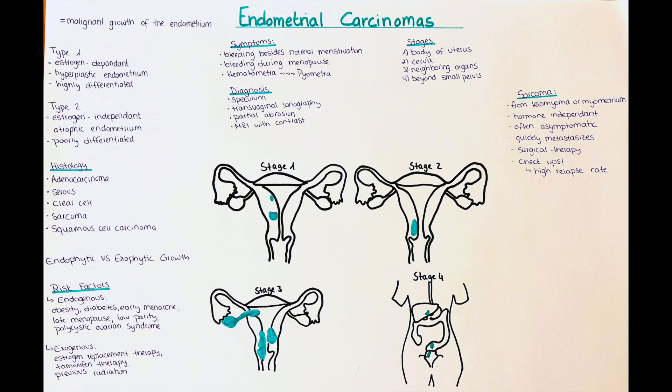There are several different types of endometrial cancer, which can be divided into two major groups. The first group is the estrogen-dependent type, also called type 1. This cancer develops from hyperplastic endometrial tissue. It is a highly differentiated type, so the prognosis is generally better than in a poorly differentiated type.